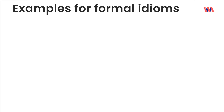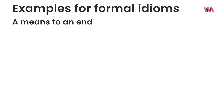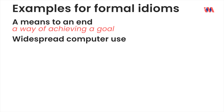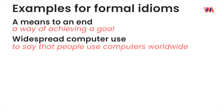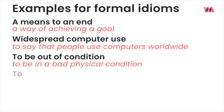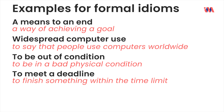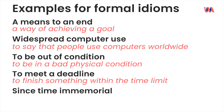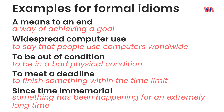Here are a few examples of formal idioms. Number 1: 'a means to an end' — a way of achieving a goal. Number 2: 'widespread computer use' — to say that people use computers worldwide. Number 3: 'to be out of condition' — to be in a bad physical condition. Number 4: 'to meet a deadline' — to finish something within the time limit. Number 5: 'since time immemorial' — something that has been happening for an extremely long time.